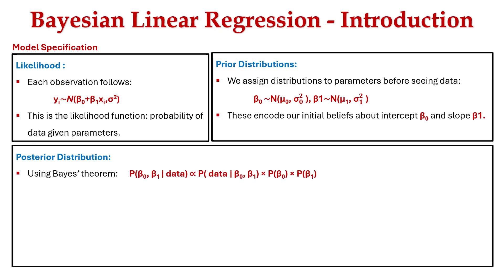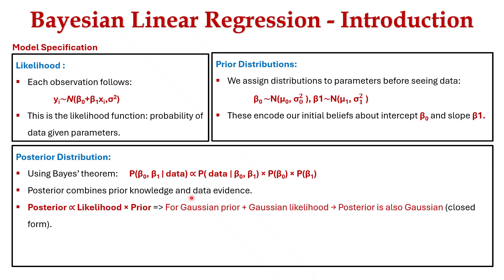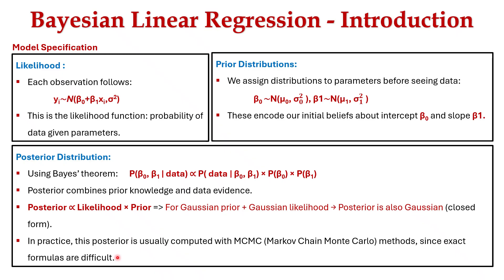For the posterior distribution, using Bayes' theorem: P(β₀, β₁ | data) ∝ P(data | β₀, β₁) · P(β₀) · P(β₁). The posterior combines both prior knowledge and data evidence — posterior is proportional to likelihood times prior. A Gaussian prior with Gaussian likelihood gives a posterior that is also Gaussian, which is a closed-form solution. The posterior is usually computed using MCMC methods, that is, Markov Chain Monte Carlo methods.